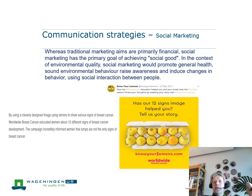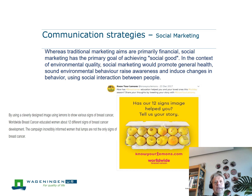Social marketing takes advantage of all the techniques developed in commercial marketing — to get people to buy things and sell products — but applied for a socially good purpose. It's not focused on financial gain, but on realizing a social good. In the context of environmental quality, it's about promoting general health, sound environmental behavior, raising awareness, inducing change in behavior, and using social interaction between people.